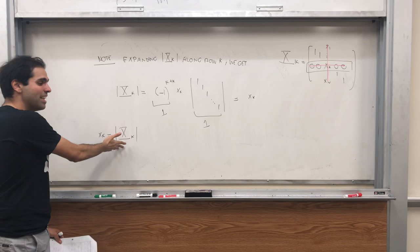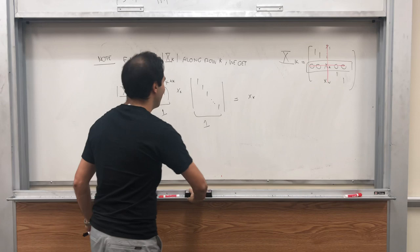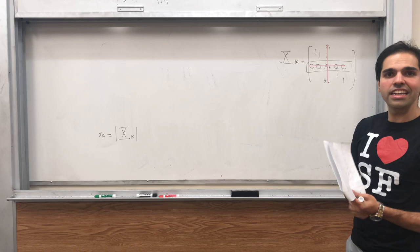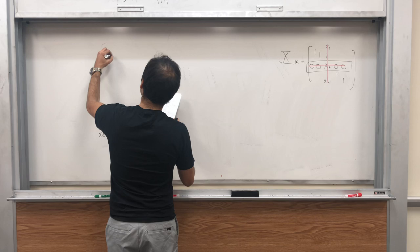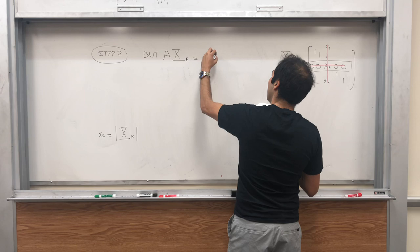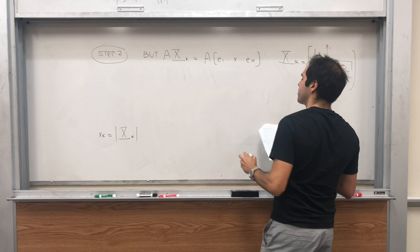So little xk is just the determinant of this big matrix, which is nice, because now we can just write our unknown in terms of a determinant, which is bound to be useful. As I said, you might be very confused, and that's completely normal. Why did we define this? Why does that work? Just be patient, or I guess fast forward or something. So we have this. On the other hand, let's now calculate A of that matrix, A Xk.